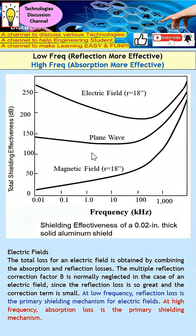However, if your noise source is actually a magnetic field, then you will probably have some challenge, especially at low frequency. As you can see here, at low frequency, there is typically no effective shielding. The shielding effectiveness only increases at higher frequency.